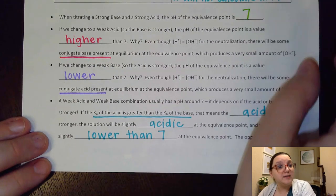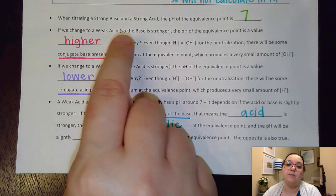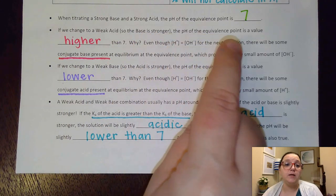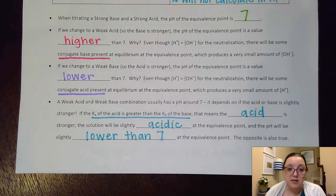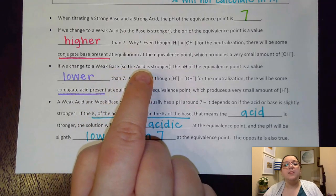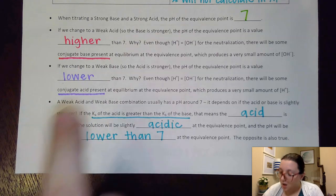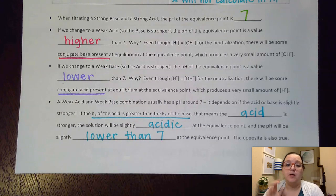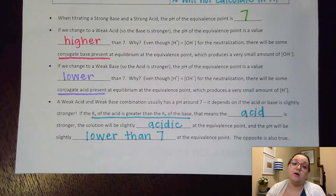Let's fill in some blanks that summarize things from above. When titrating a strong base and a strong acid, the pH of the equivalence point is 7 on the nose. However, if we change to a weaker acid — so the base is strong — then the pH of the equivalence point is a value higher than 7. The reason is there's going to be some conjugate base present at equilibrium because of the equilibrium that weak acid undergoes. Also, if we change to a weak base with a strong acid, then the pH of the equivalence point is a value lower than 7, because the conjugate acid of the weak base would be present even though you're at the equivalence point.